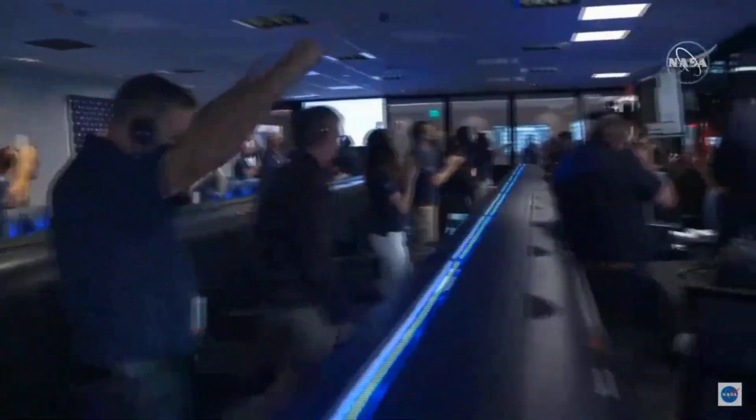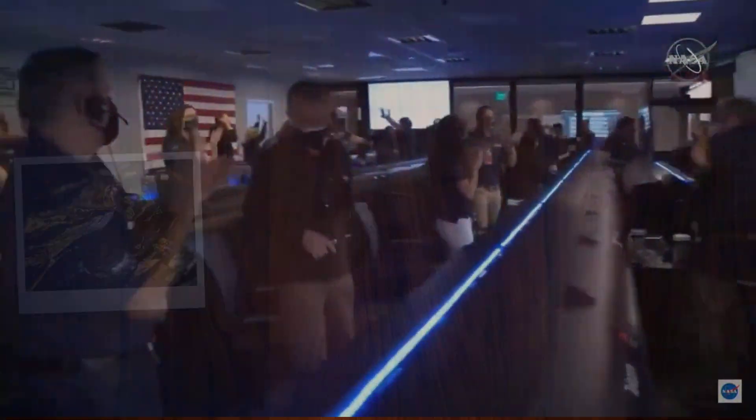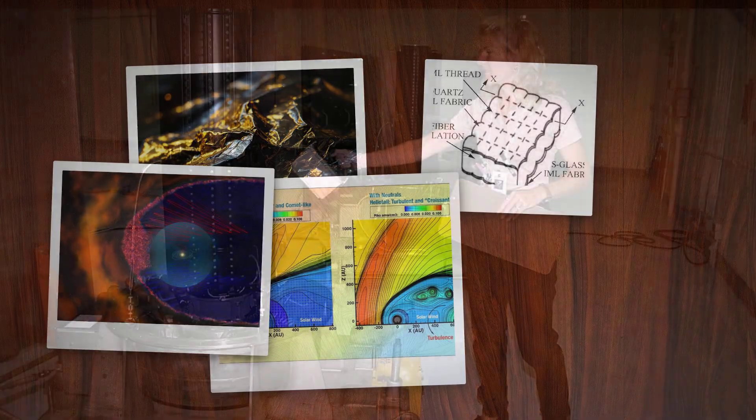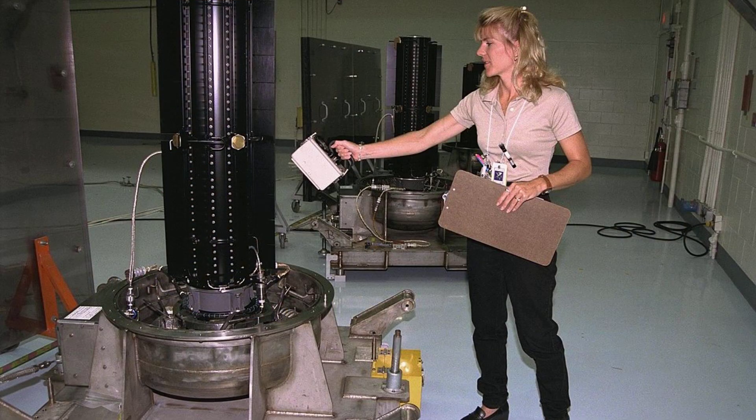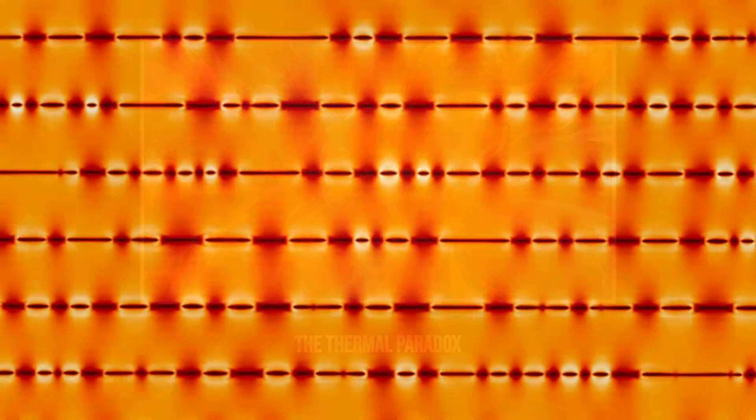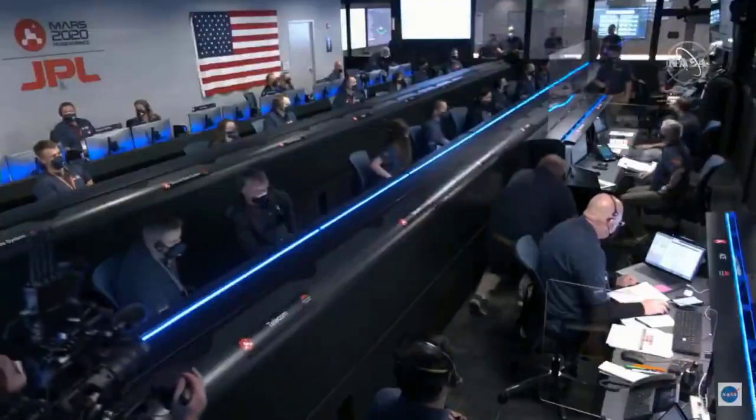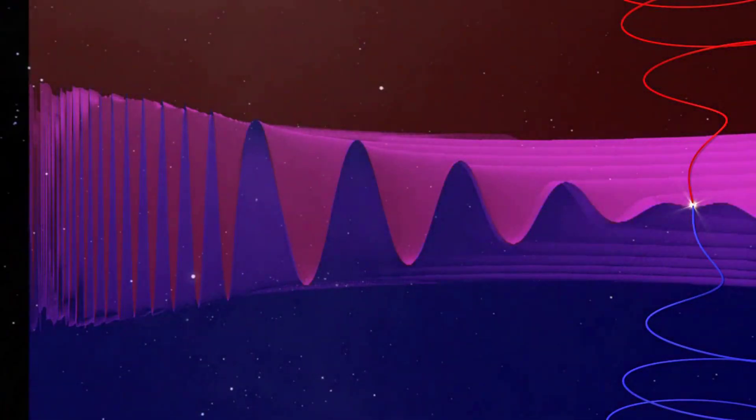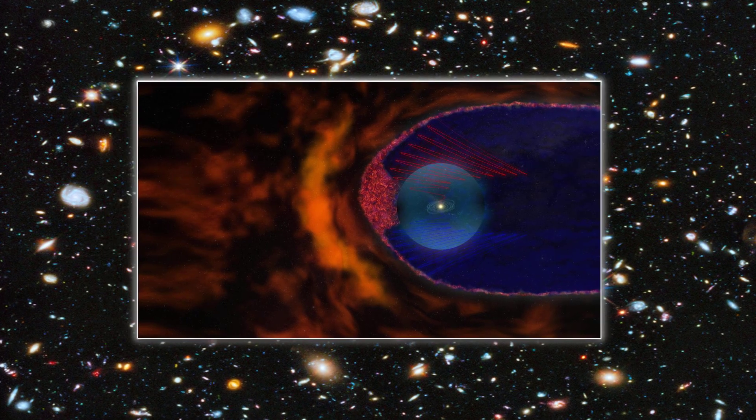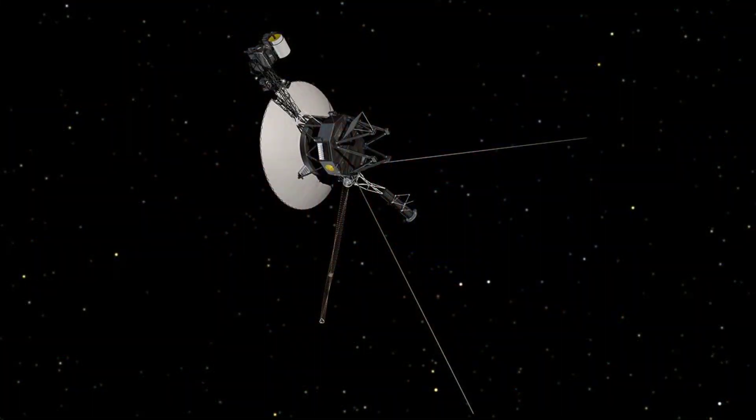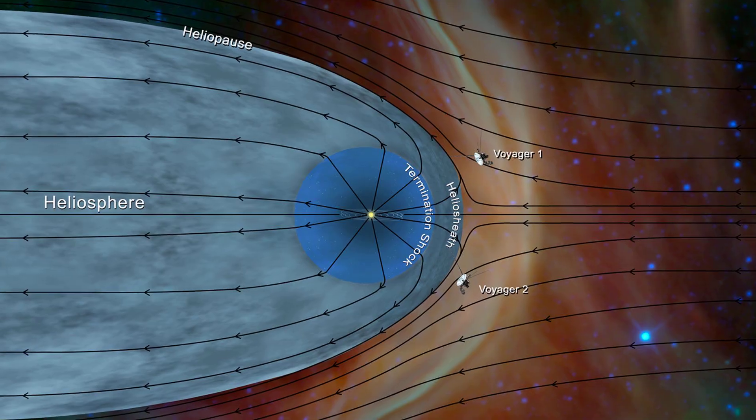Such temperatures, in theory, should have incinerated any spacecraft. Yet Voyager pressed on, its 1970s insulation and radiative cooling quietly doing their job in the near-perfect vacuum. The paradox was clear: blistering heat but almost no matter to transfer it. Out here, temperature meant the speed of particles, not the threat of burning. As the flight team watched the data stream in, what had seemed a distant, abstract boundary became real. A wall of fire, confirmed by the faint hum of plasma waves echoing from the galaxy beyond. Voyager, alone in the void, had become the first witness to the true edge of the Sun's domain.